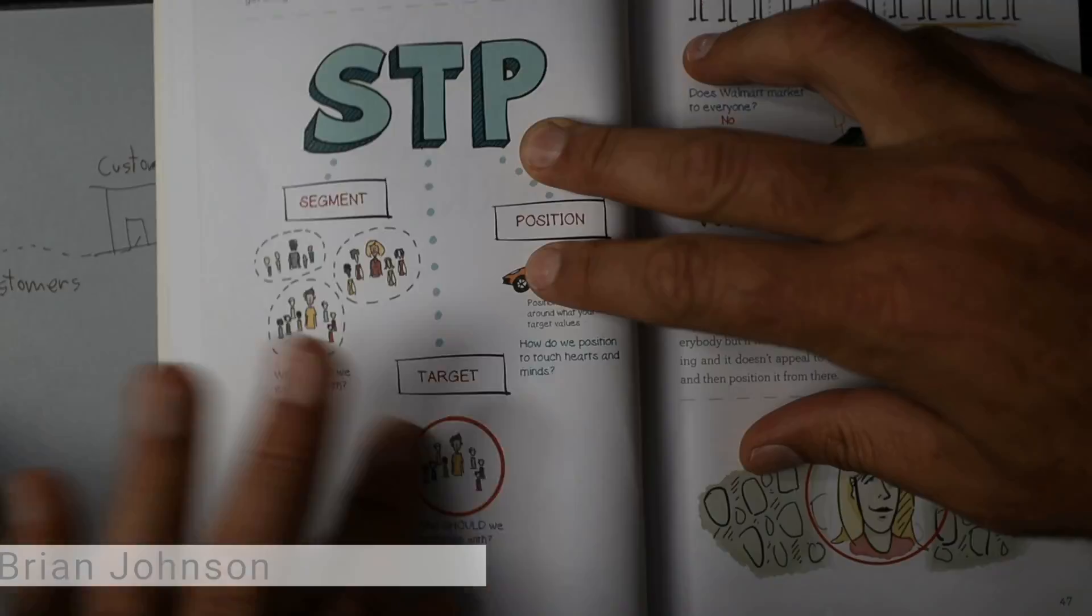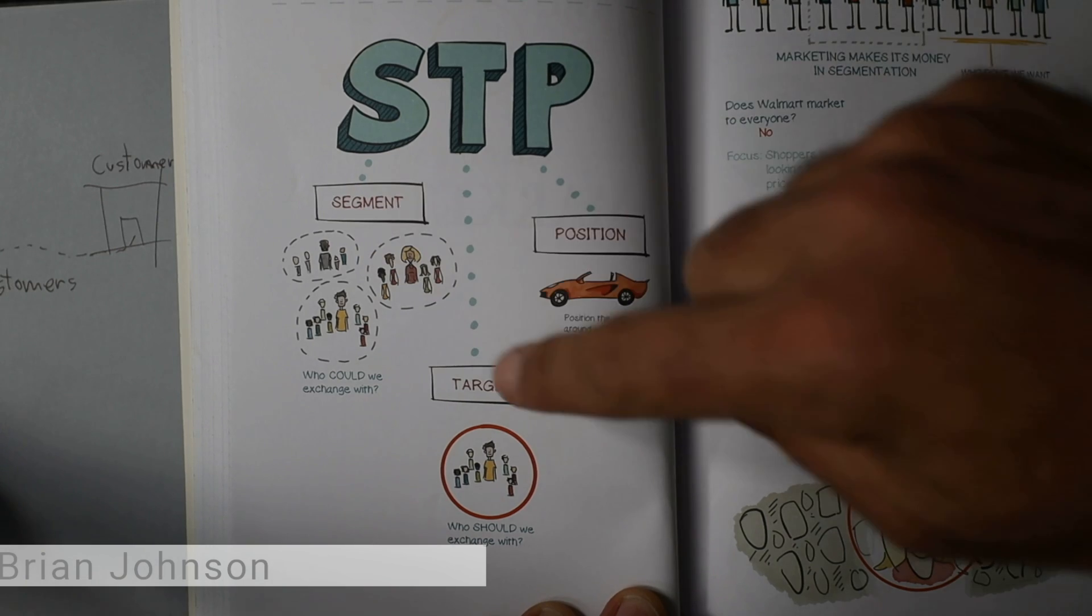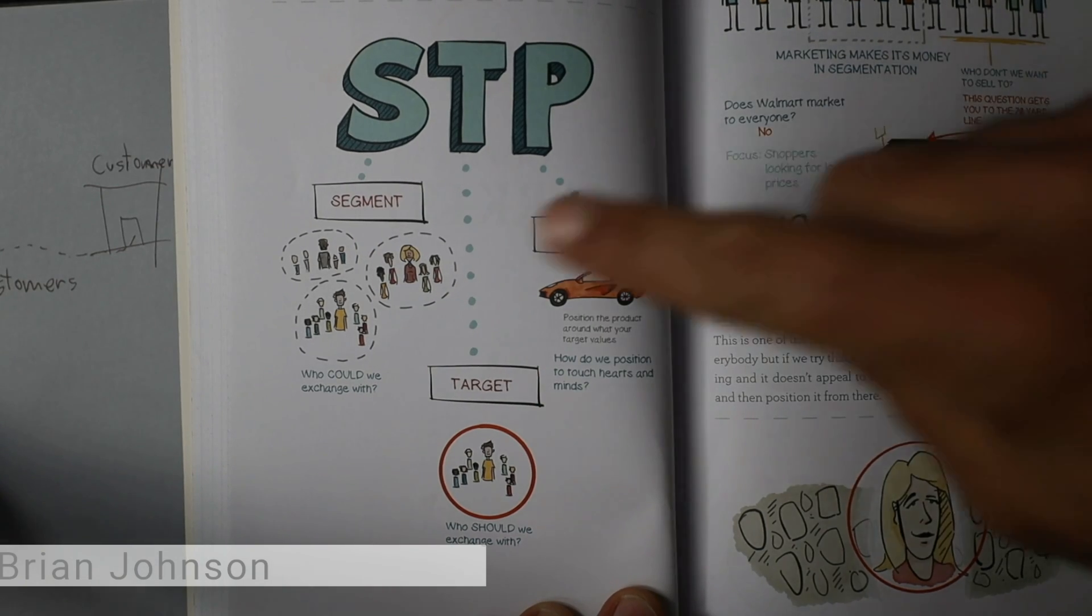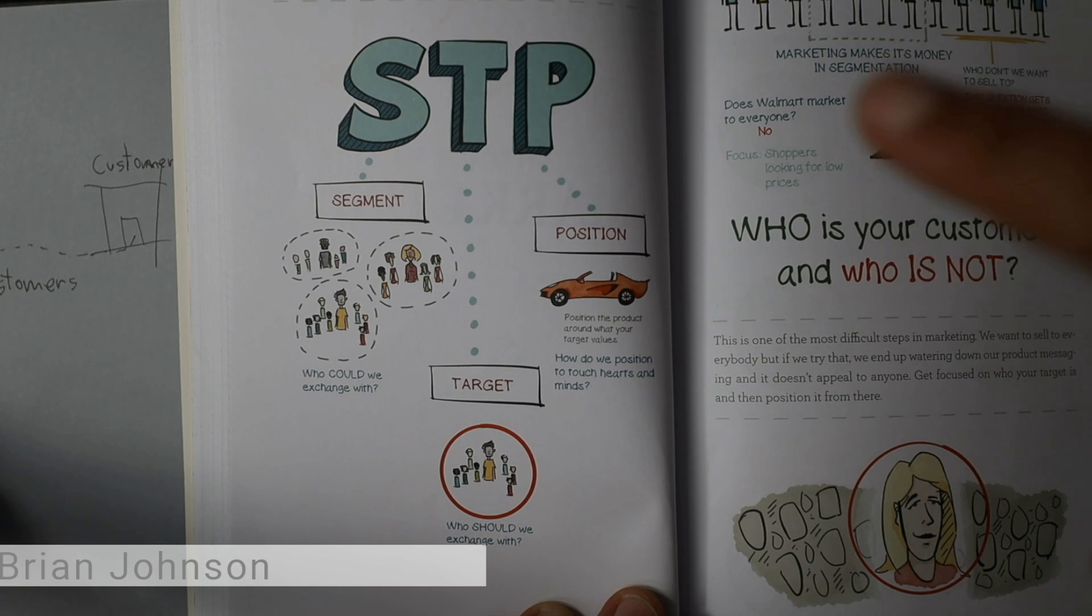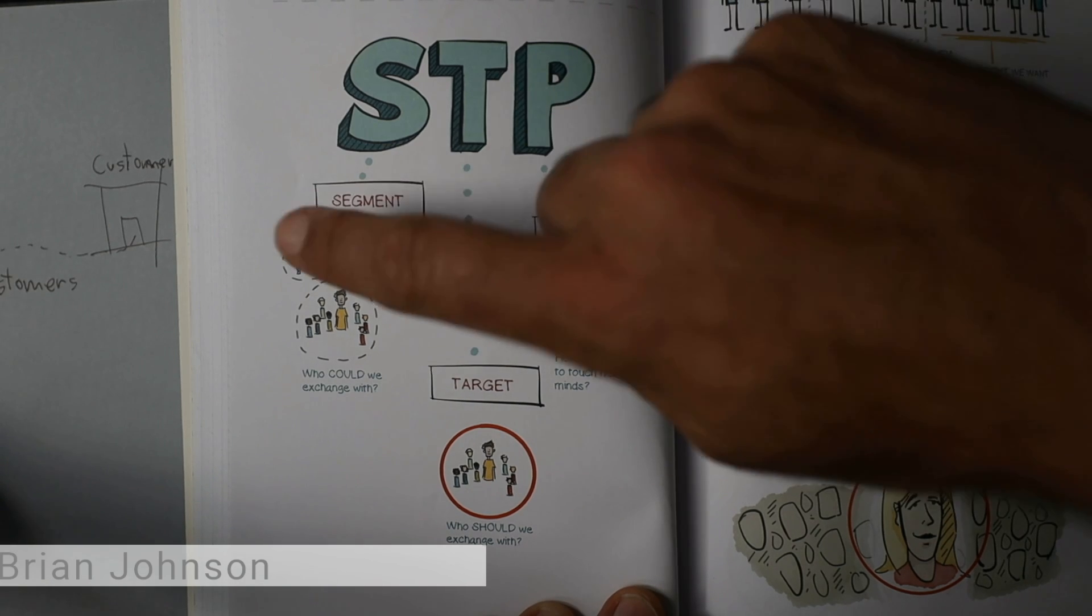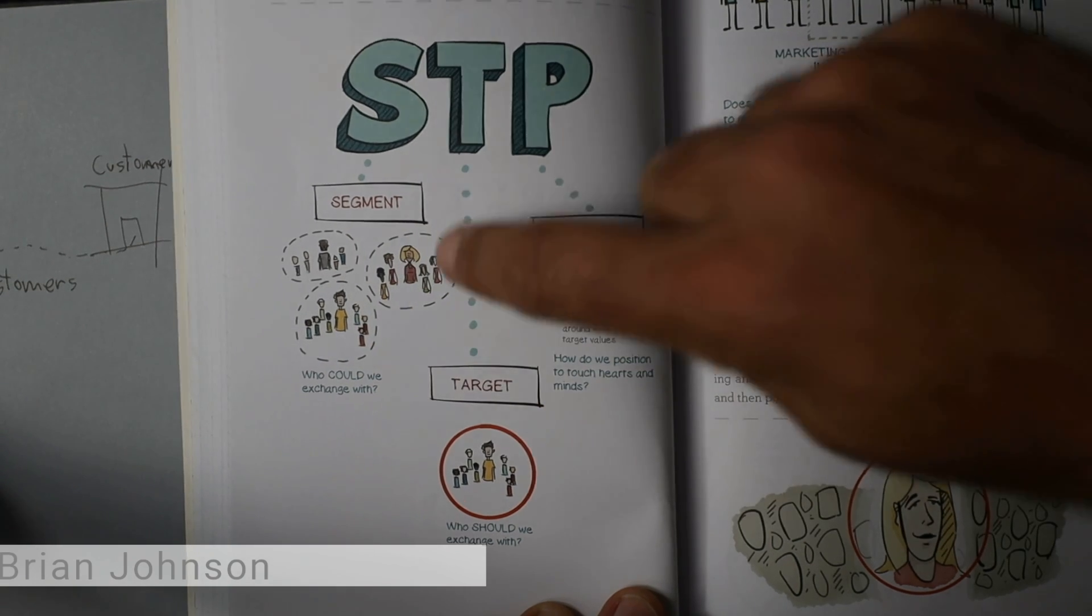Those are the customers I'm thinking about. I need to start by following this little framework here, STP. And that stands for segment, target, position. The first task is what I just did is segmenting people that I could serve with this technology that I'm working on. We talked about land surveyors, homeowners and renters in a neighborhood, and the government.